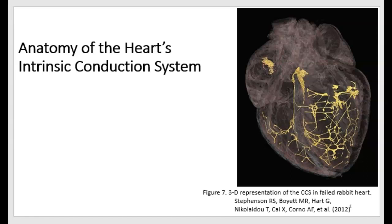Hello, this is Gina Piscitelli with another lecture for Anatomy and Physiology II. In this lecture, we're going to look at a special part of the heart called the intrinsic conduction system. This system has cells that conduct electrical impulses throughout the heart so that the atria and the ventricles contract in a particular sequence. The picture you're looking at is a rabbit heart, not a human heart, and the regions in yellow are the intrinsic conduction system. This is a three-dimensional reconstruction of that conduction system, and the cells within it have the ability to conduct action potentials at a particularly quick rate.